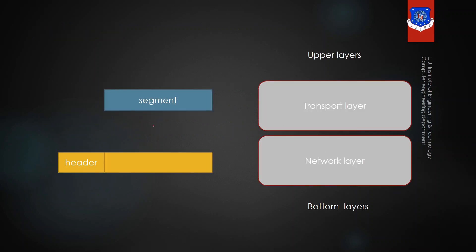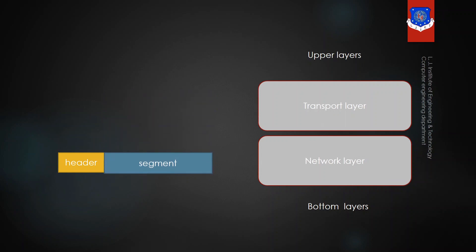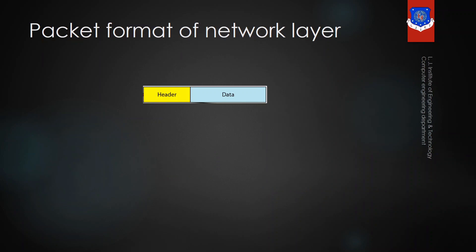In the transport layer, segments are generated and passed to the network layer. The segment is encapsulated in the network layer, a header is added, and together it is called a packet. In the packet, the data received from the upper layer has a header added to it. Let's see what is inside the header.